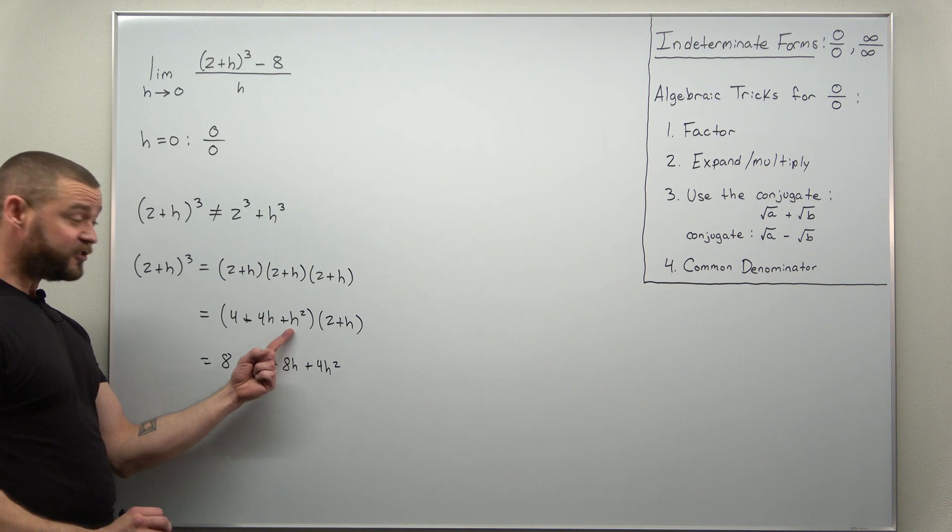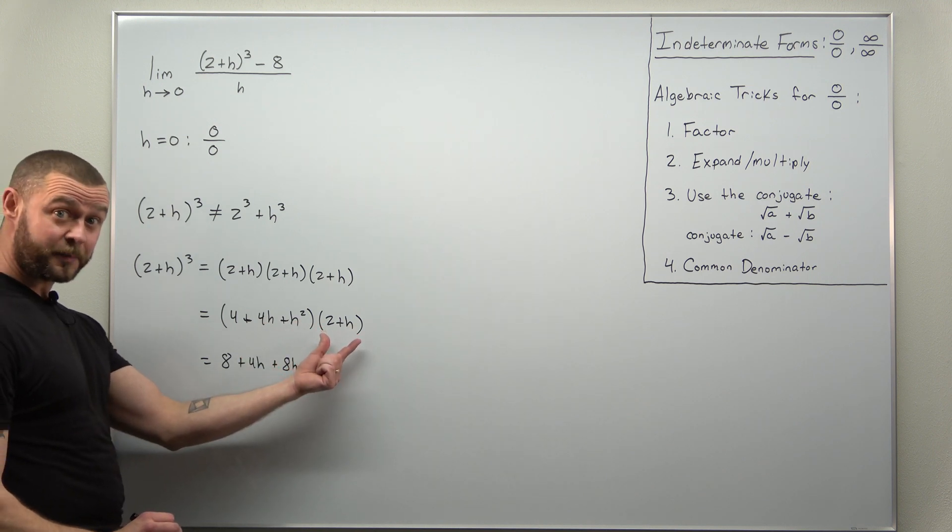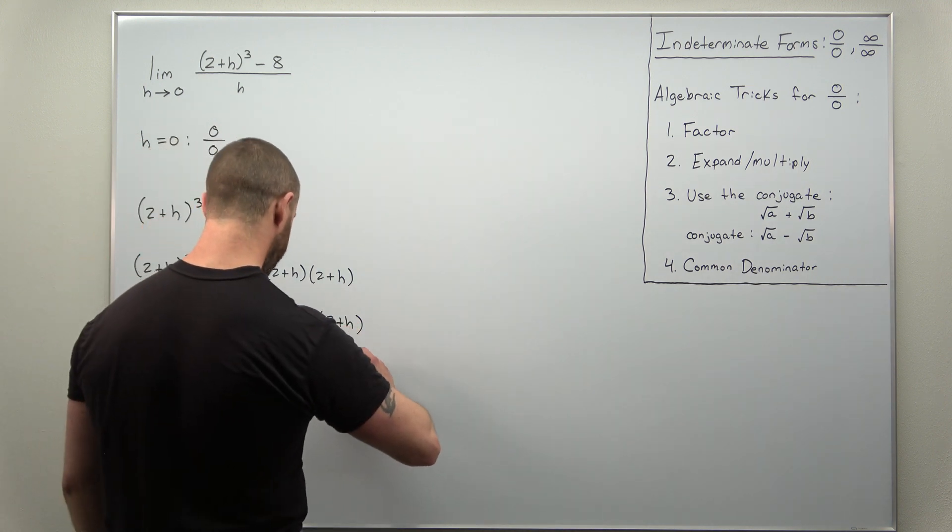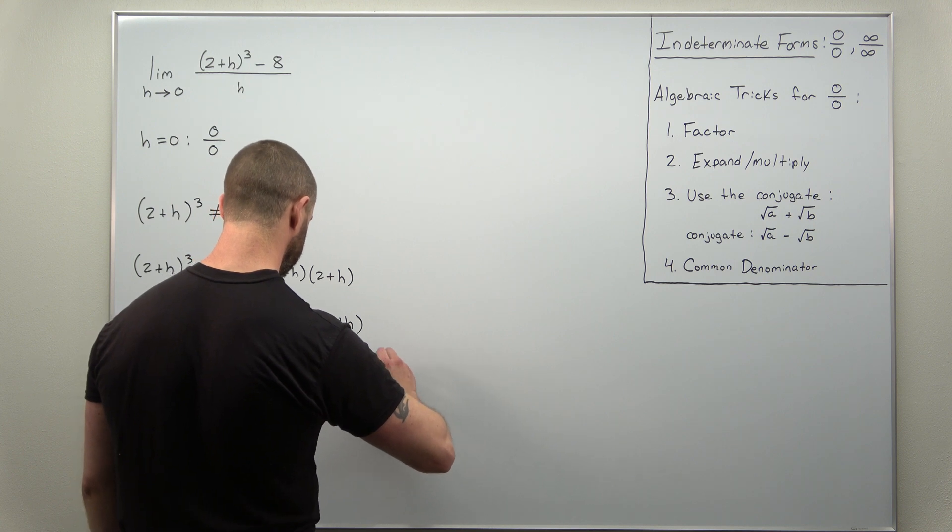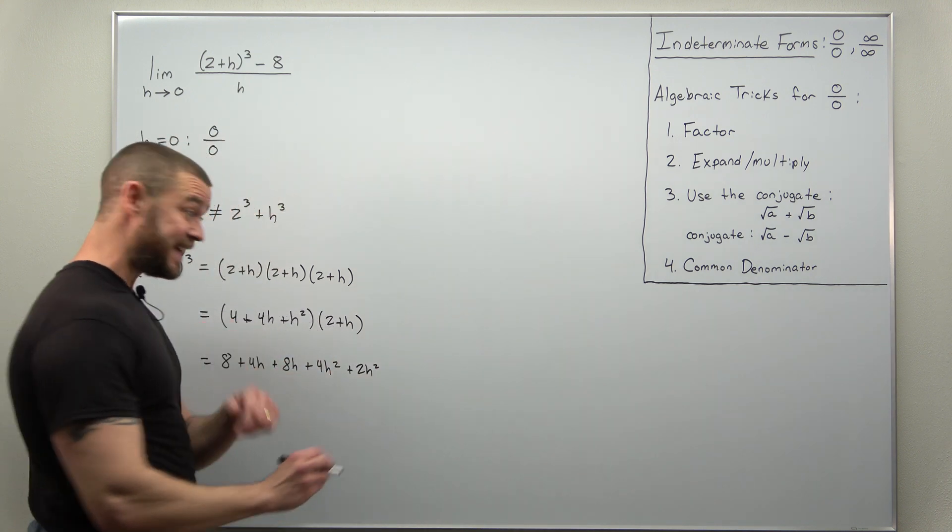and now we multiply h² to both these terms in the parentheses, so we'll get 2h² and then plus h³.